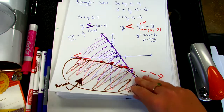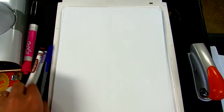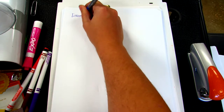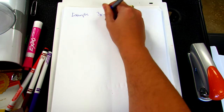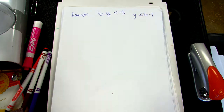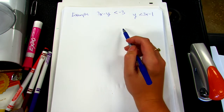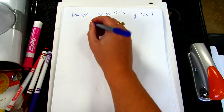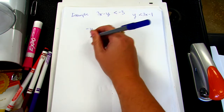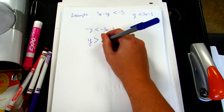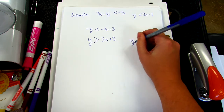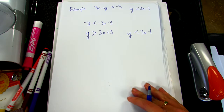Next example: 3x minus y is less than negative 3, and y is less than 3x minus 1. First, put them both into slope-intercept form by solving for y. The first one becomes negative y is less than negative 3x minus 3; multiply everything by negative 1 and the sign flips, giving y is greater than 3x plus 3. The second one is already in slope-intercept form.